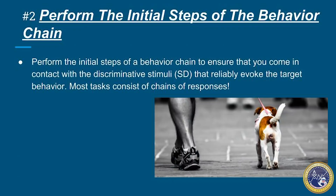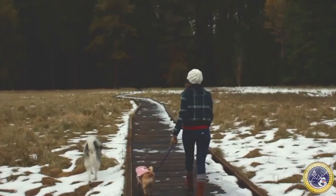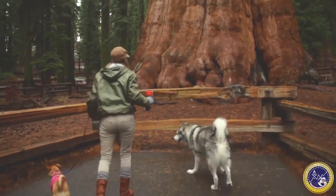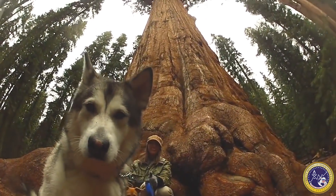The second point I want to discuss is performing the initial step of a behavior chain. Nearly all of the tasks we complete in our daily life are chains of responses, and we want to ensure that you come in contact with the SD that reliably evokes the desired behavior. For example, if you want to start taking your dog out for a walk every morning, the first step as soon as the thought crosses your mind should be to grab that leash. Once you have the leash, you put it on the collar, walk to the door, and go for your walk. It is very important to make that first step very manageable and very likely that you are going to complete it — make it easy, make it small.